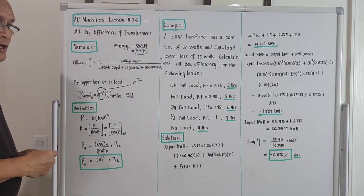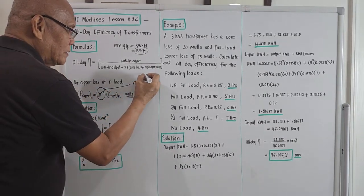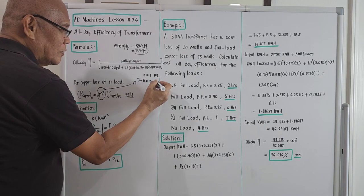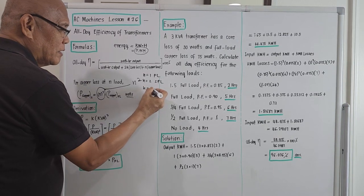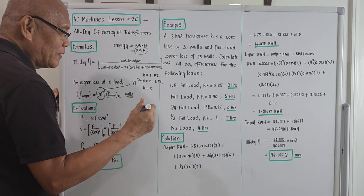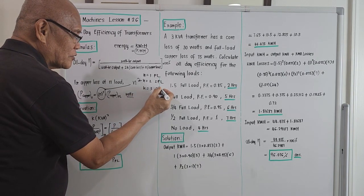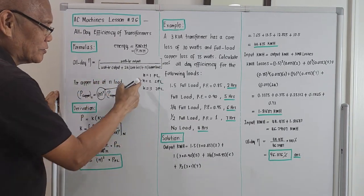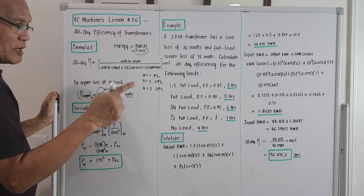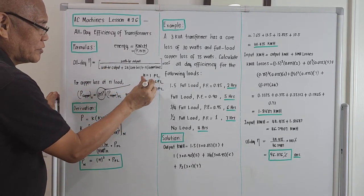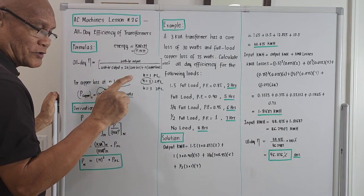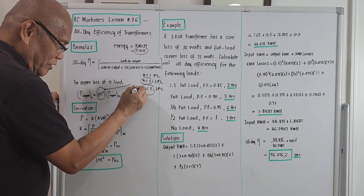In this formula, n is a load multiplier. If n equals 1, that is full load. If n equals 2, that is twice full load. If n equals 3, that is three times full load. Take note of the given problem to find the correct value of n. If the problem asks for copper loss at twice full load, n equals 2. If it asks for three times full load, n equals 3.